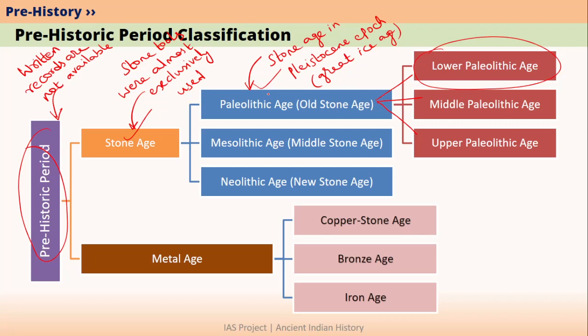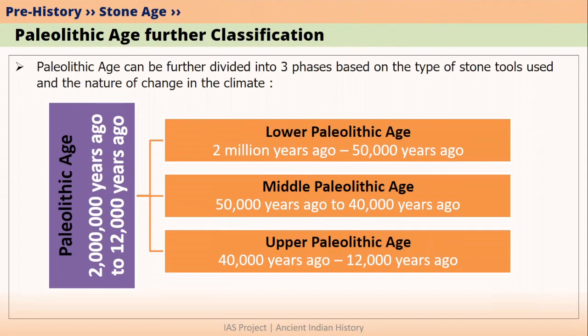Let's look at the classification of Paleolithic Age, that is the Old Stone Age. Paleolithic Age can be basically classified or divided into three parts. The basis for such division is the type of stone tools that were used in these periods and the nature of change in climate that happened.